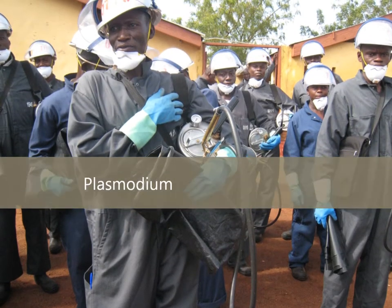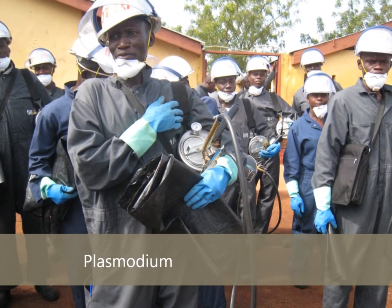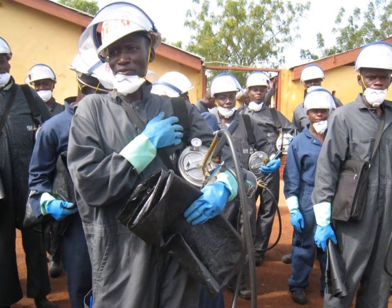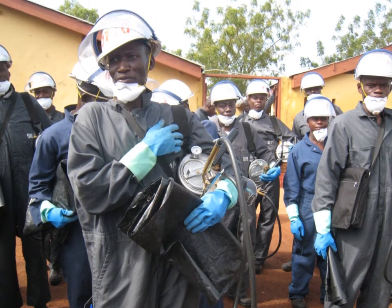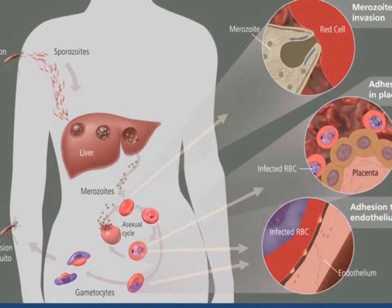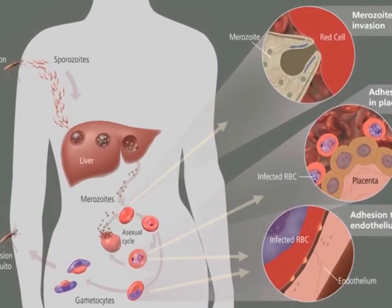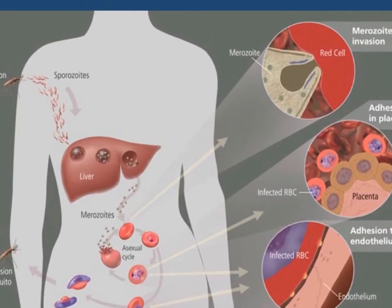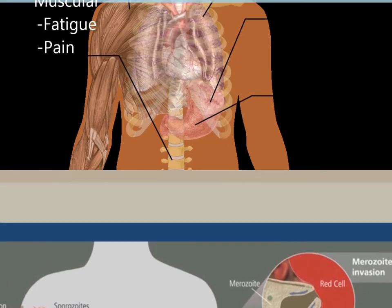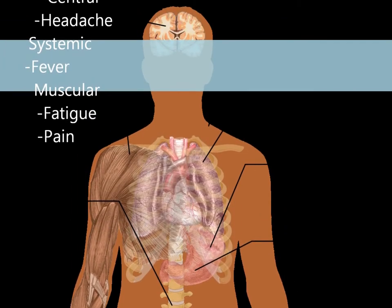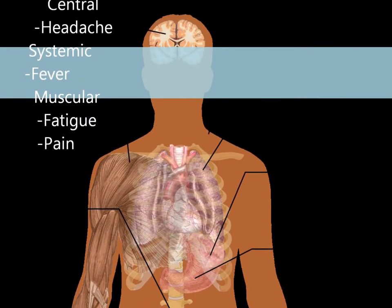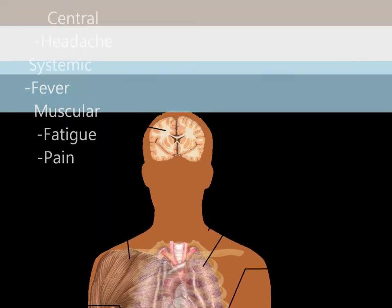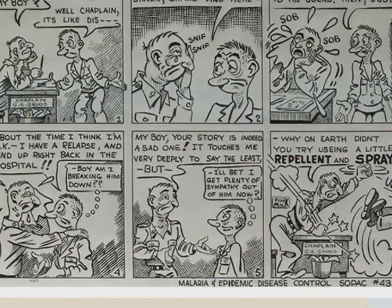Malaria is caused by a parasite called Plasmodium, which is transmitted via the bites of infected mosquitoes into the human body. The parasites multiply in the liver and then infect red blood cells.